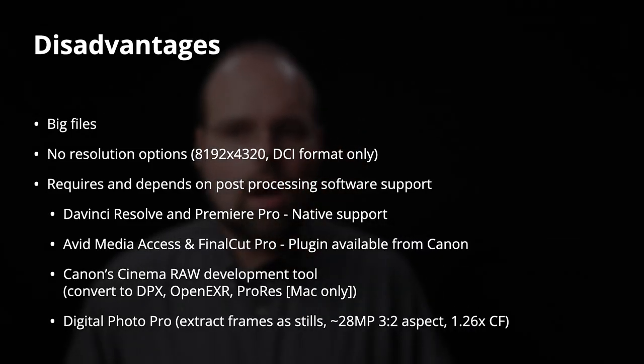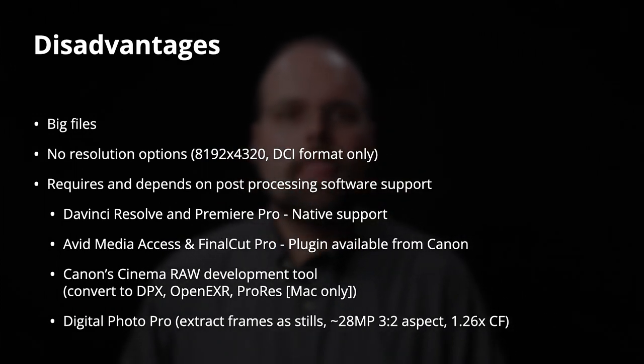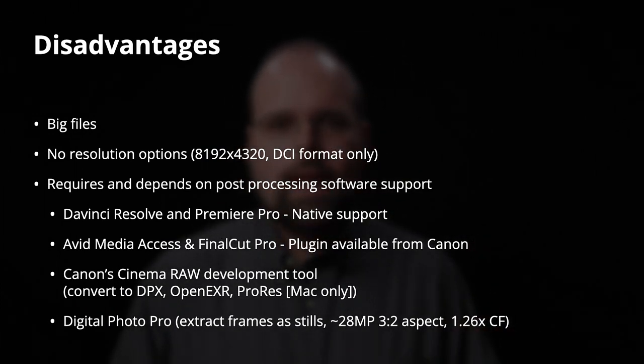Those advantages come with some pretty big disadvantages — all surmountable, but definite disadvantages. First, the files are huge. Canon targets 1.35 to 2.6 gigabits per second as the bit rate for raw files on the R5, which translates to less than 15 minutes of recording on a 128-gigabyte card. Second, the camera gives you no resolution options — the only option on the R5 is to shoot in 8K DCI format. You can't use crop mode, which means no free teleconverter effect or smaller files.